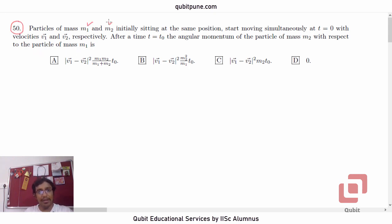Particles of mass m1 and m2 initially sitting at the same position start moving simultaneously at t equal to 0 with velocities v1 bar and v2 bar respectively. After a time t equal to t0, the angular momentum of particle of mass m2 with respect to the particle of mass m1 is.